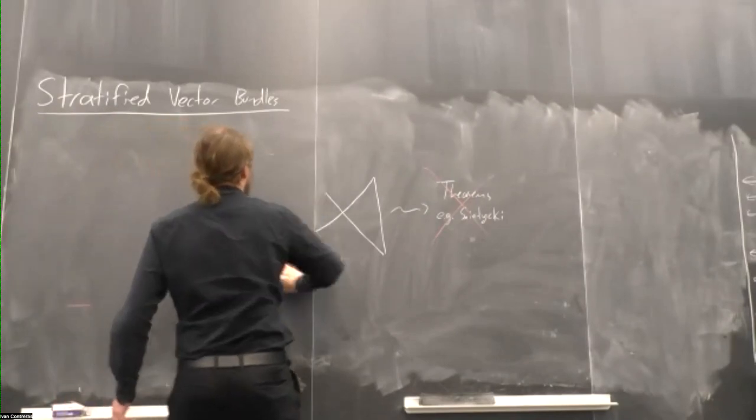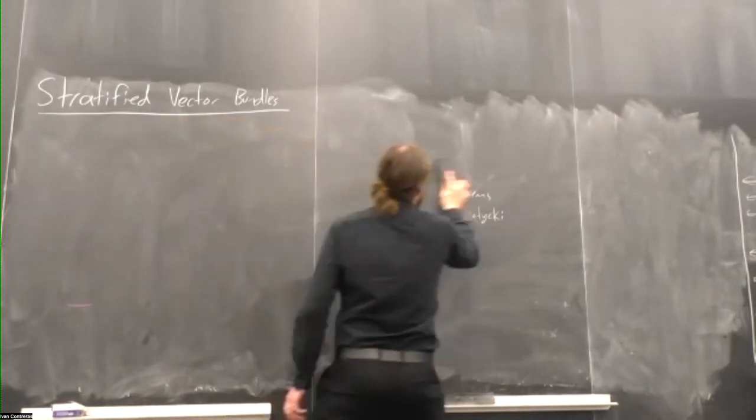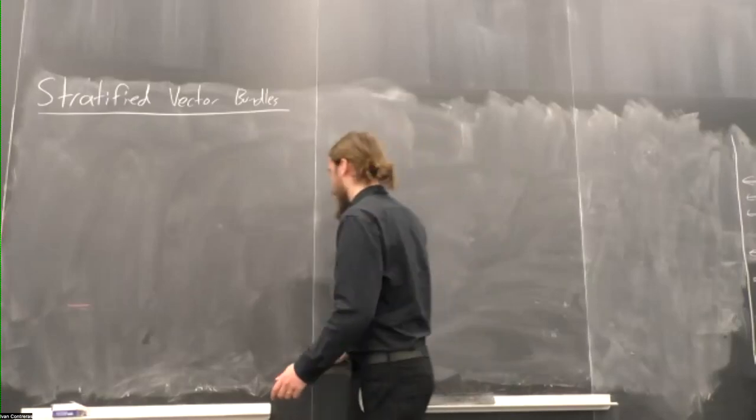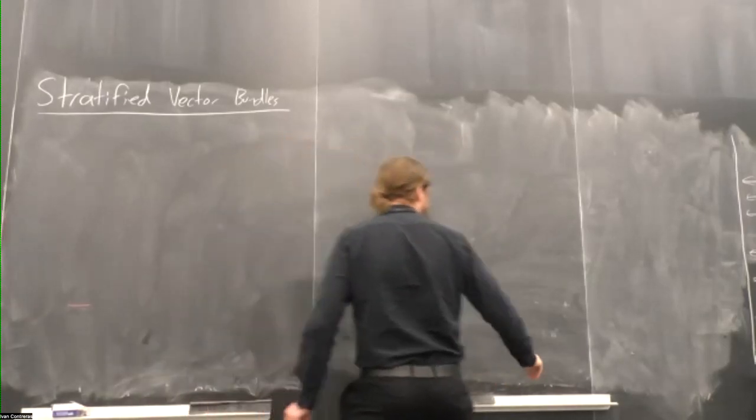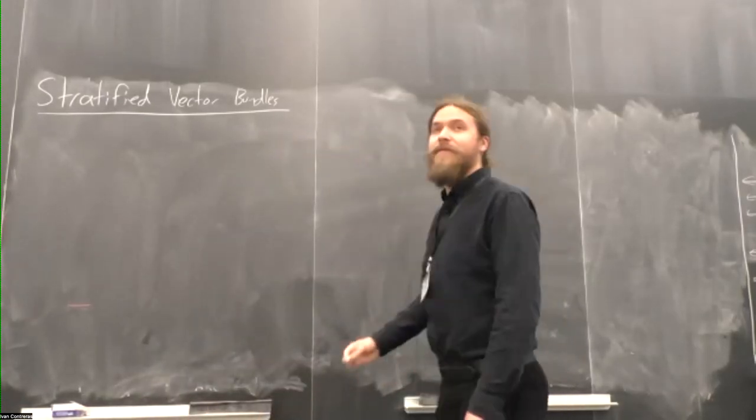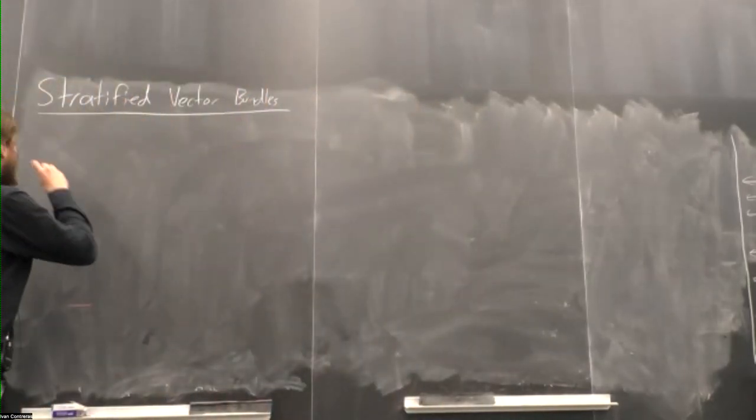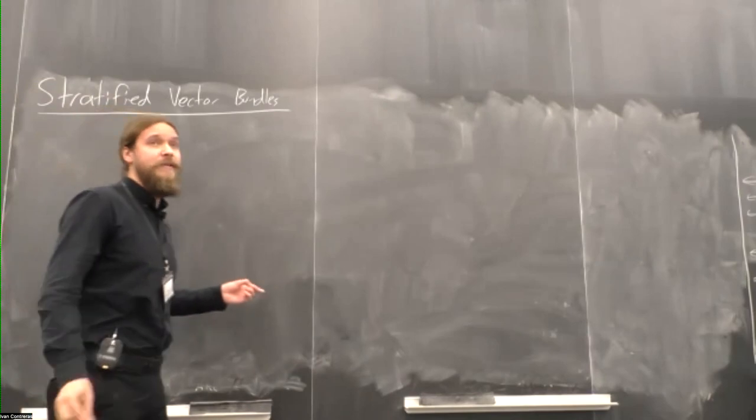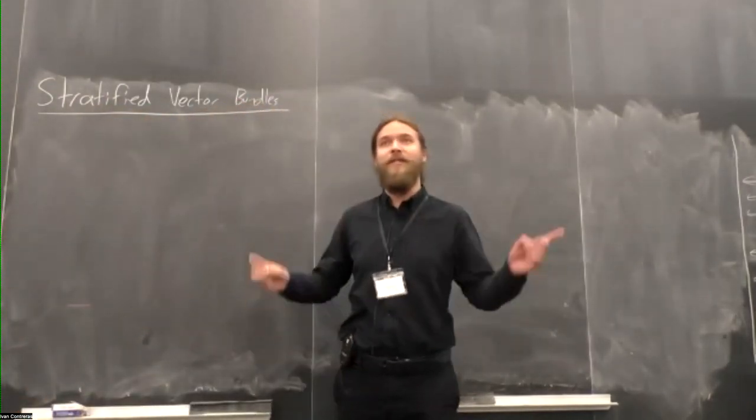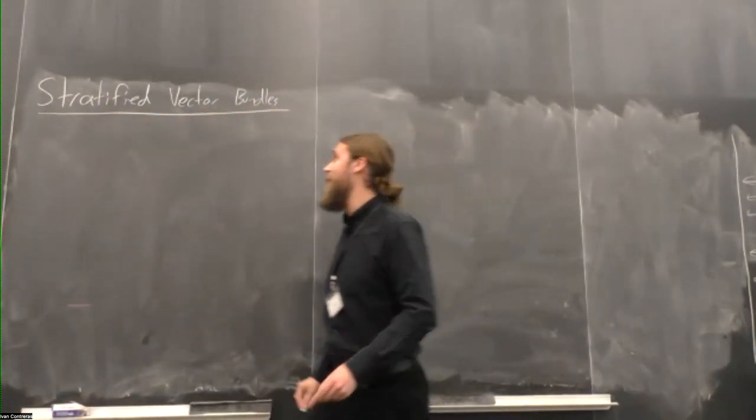But I don't have time to get into really developing the theory too much of this. All I'll have time to do is just tell you the definition, and then go through a few examples. First off, stratified vector bundles, they live over stratified spaces.